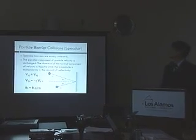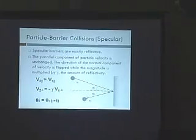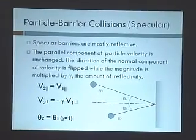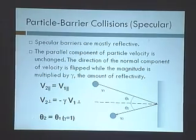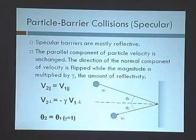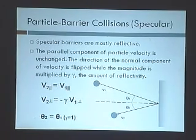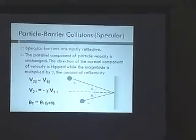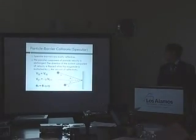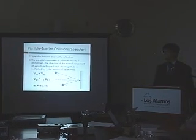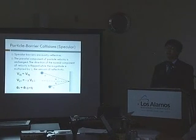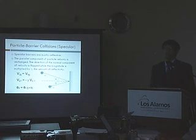When particles collide with a boundary, we use a different set of equations. The first type of boundary is known as specular boundaries. These boundaries are mostly reflective — when a particle comes in, it will hit the boundary and bounce off. We assume that V2 parallel, the parallel component of the particle velocity to the object, will remain unchanged. The perpendicular component of velocity will change: we flip the sign because it's bouncing back the other way, and we multiply by a constant gamma. Gamma represents the reflectivity of our object — for example, an object that is 70% reflective will have a gamma equal to 0.7.